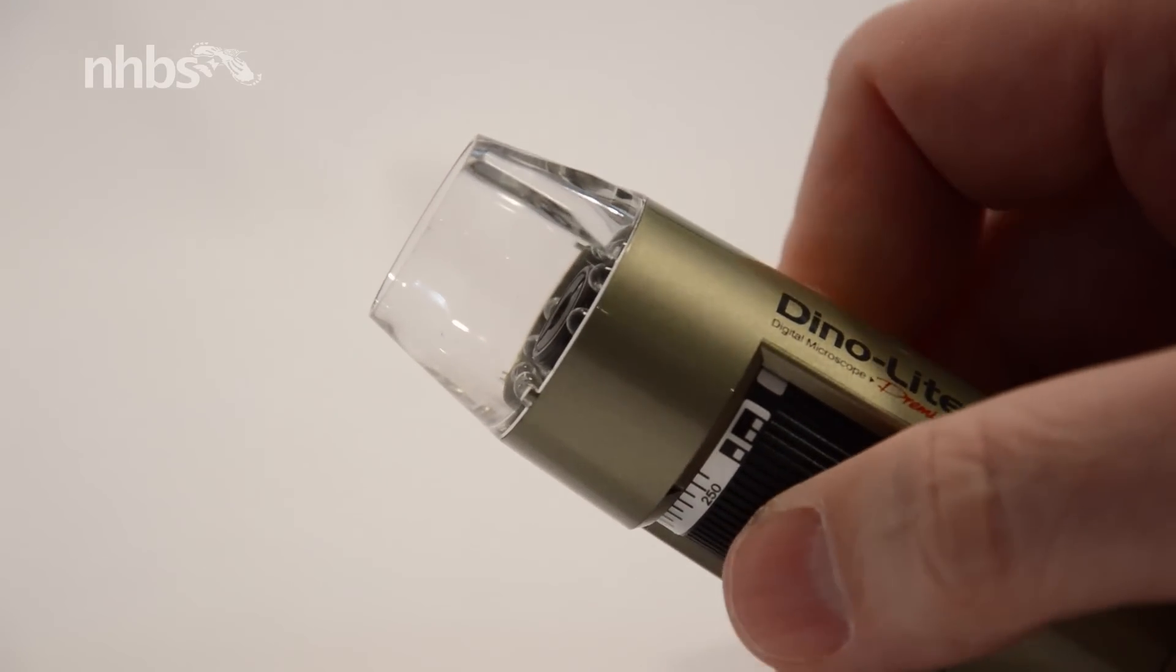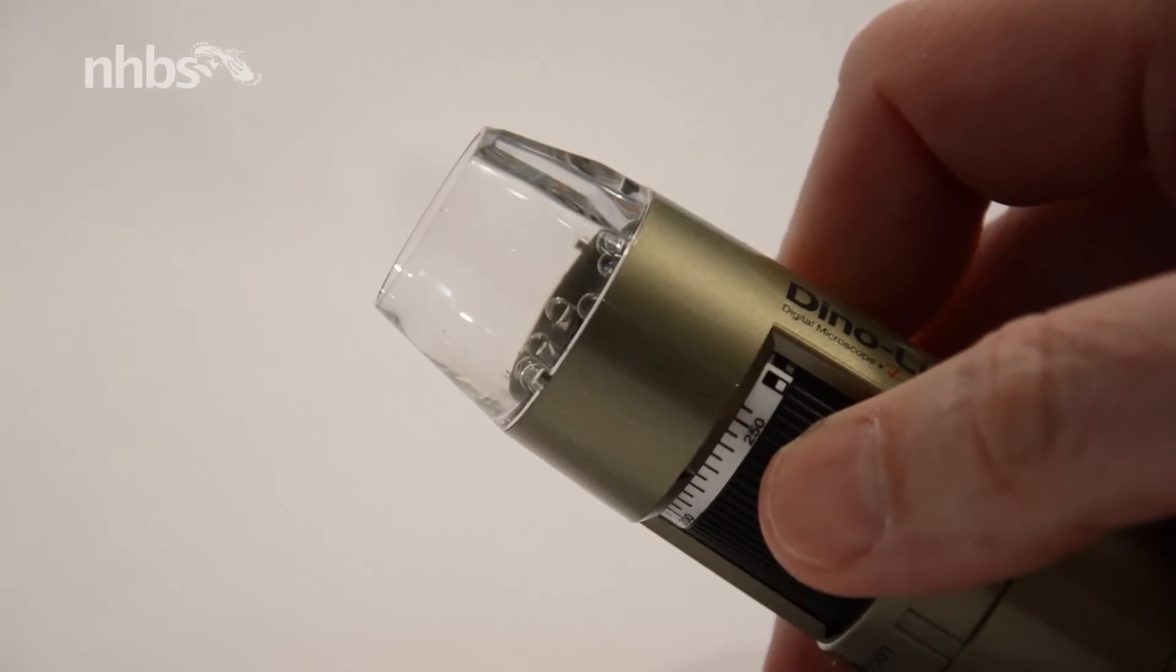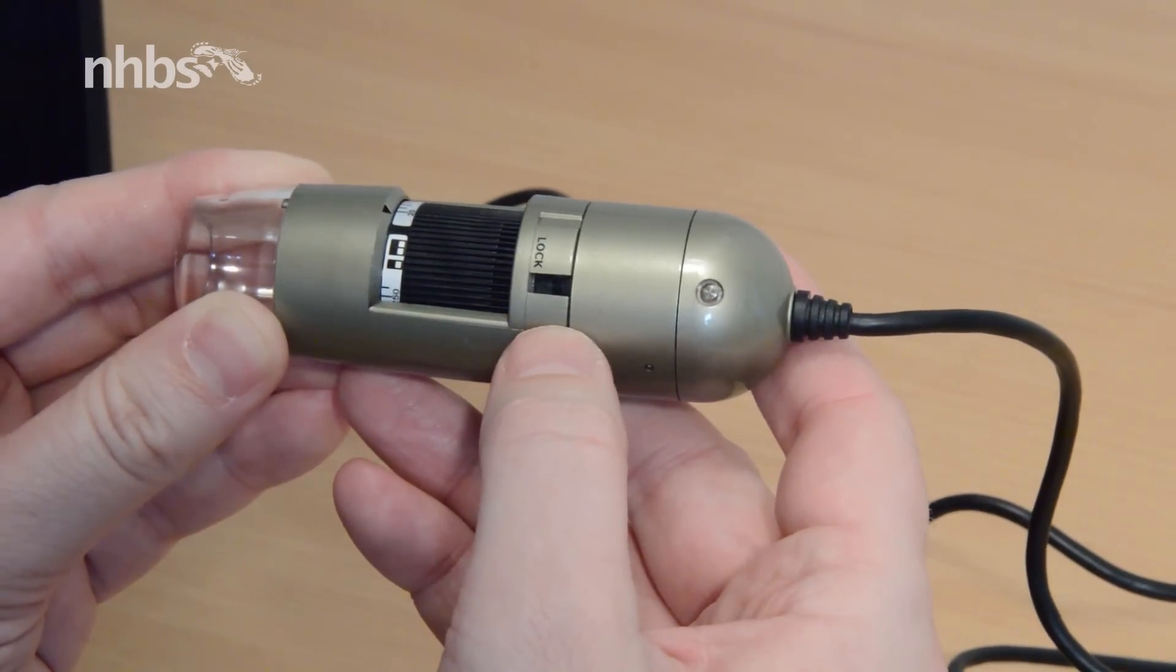On the side there's the thumb wheel which alters the zoom and focus by simply shifting the lens up and down, and this can be locked with the switch here.